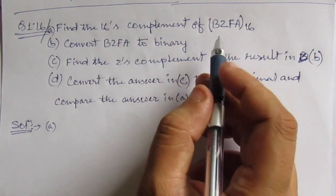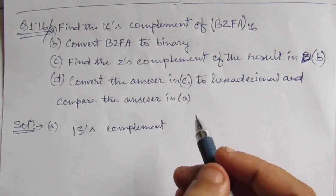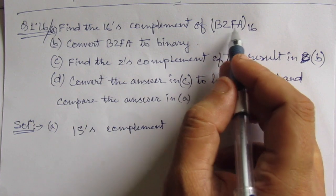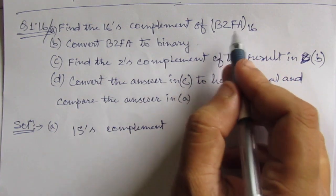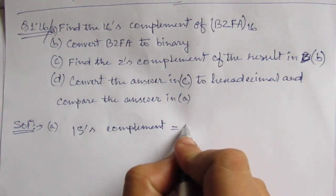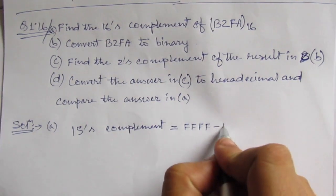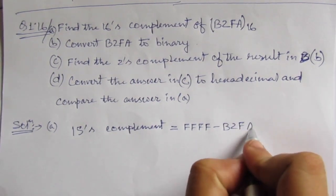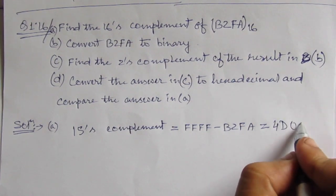So first of all, let us find out the 15's complement. Whenever you have to find out the R-1's complement, write the maximum number with 4 number of digits in hexadecimal and then subtract this number from that number.